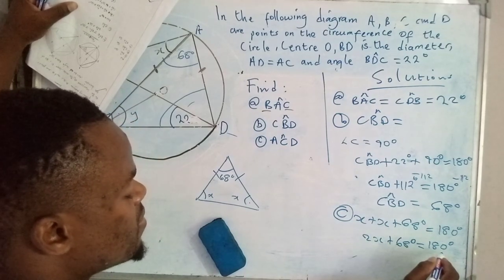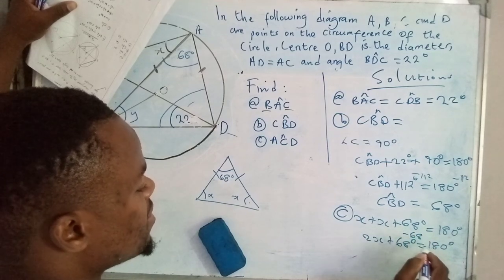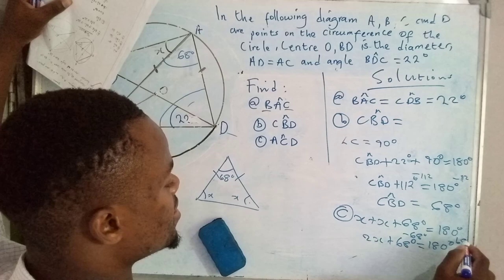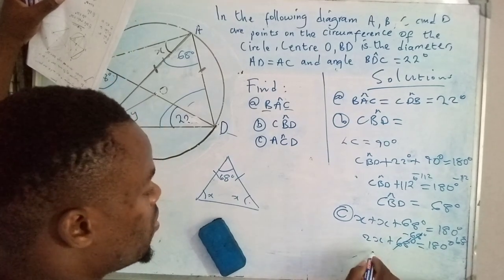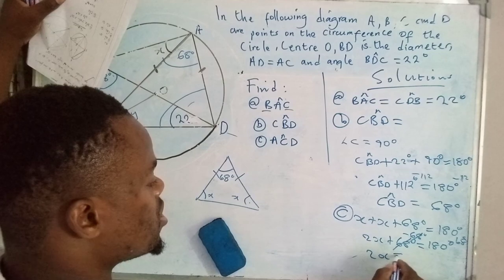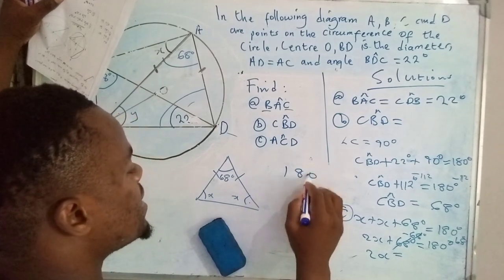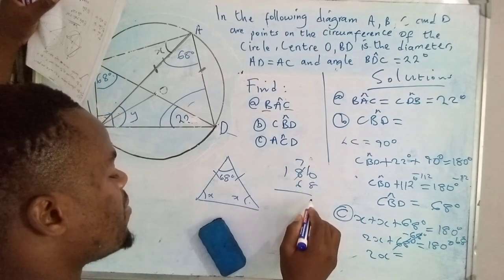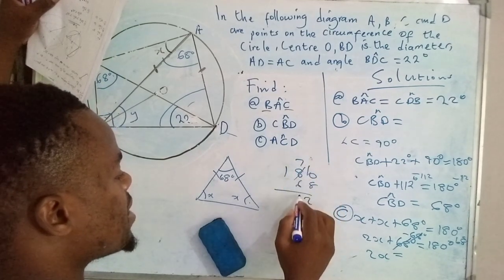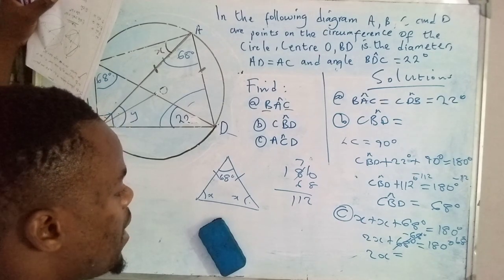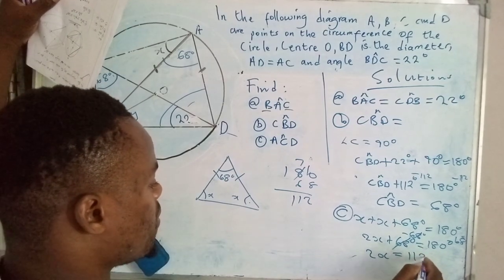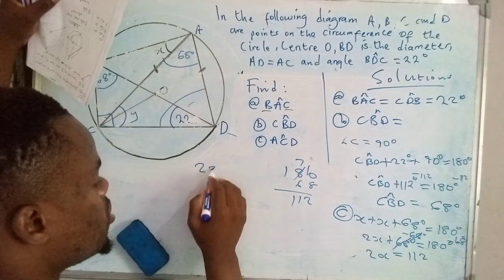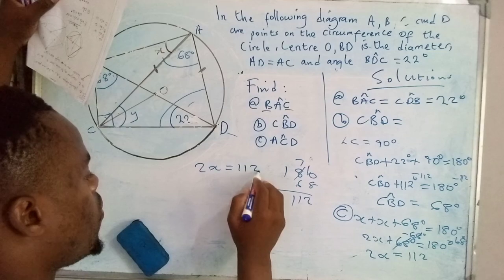X plus X—these are two like terms—so that gives us 2X plus 68 degrees equals 180 degrees. This one is the like term to that one, so we bring in the additive inverse, which is minus 68 degrees on both sides. These two will cancel, leaving 2X equals—what's 180 minus 68? You get a one from here, 10 minus 8 is 2, 7 minus 6 is 1, that's 112.